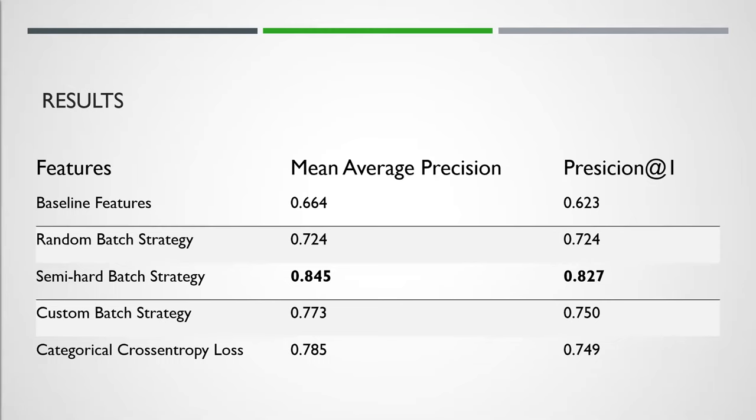The following metrics were used to evaluate the performance of each approach: mean average precision, which is a measure of the average recommendation precision over all queries, and precision at one, which indicates how many of the first recommendations were correct. The results showed that the best performing approach was with the triplet loss metric using the semi-hard batch strategy. This approach scored highest for both metrics.